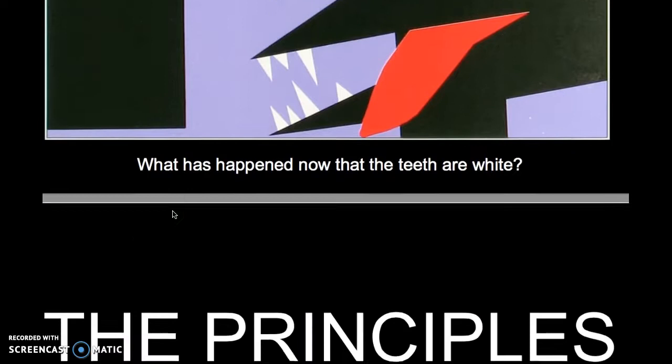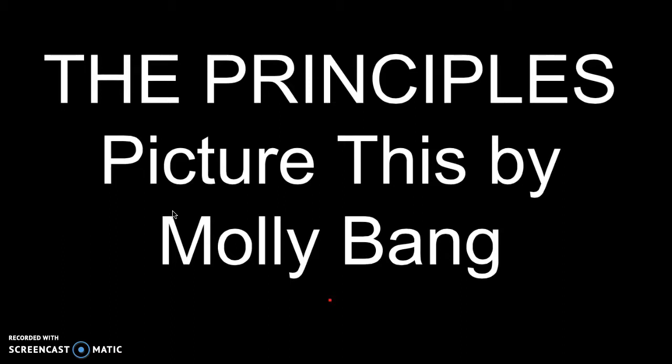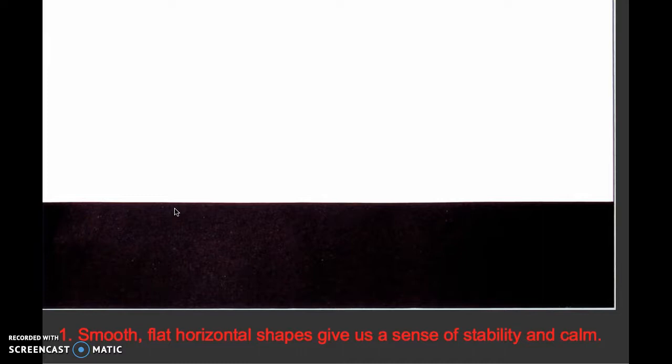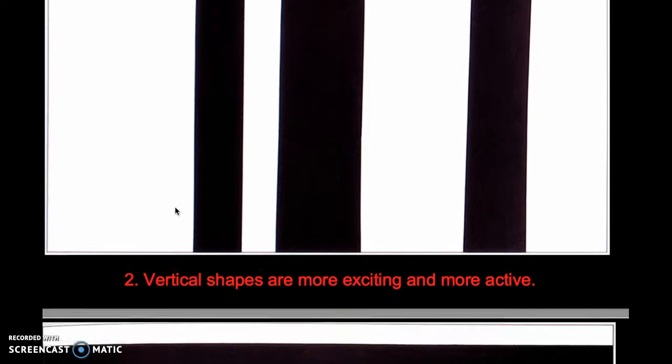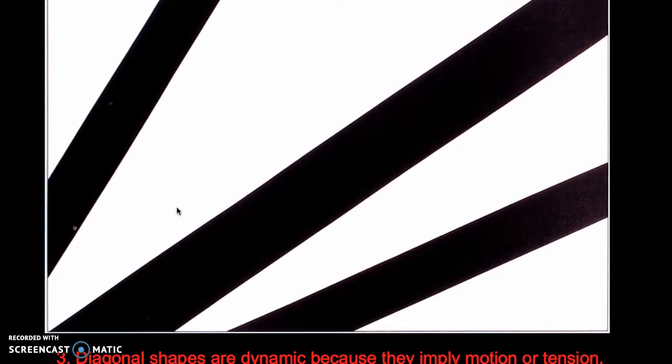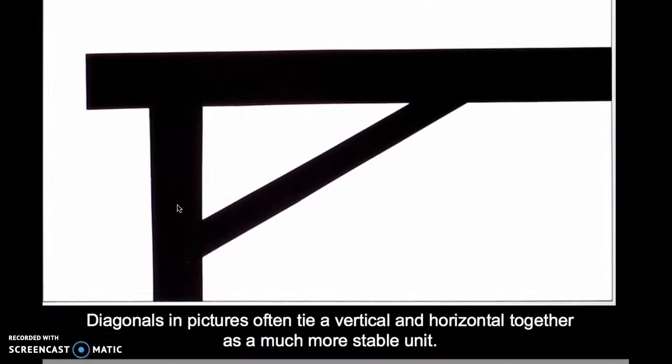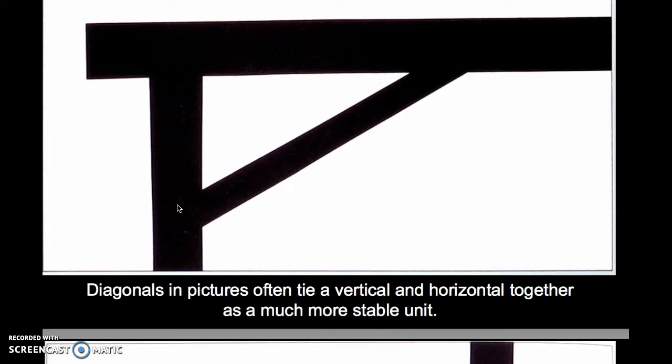So that was her simple story. Here now are the principles you're going to be using as you look at other images throughout the course. A smooth, flat, horizontal shape gives us a sense of stability and calm. Vertical shapes are more exciting and more active. But when we place a horizontal bar back on top, we create again the sense of stability. Diagonal shapes are dynamic because they imply motion and tension. Diagonals in pictures often tie a vertical and horizontal together as a much more stable unit.